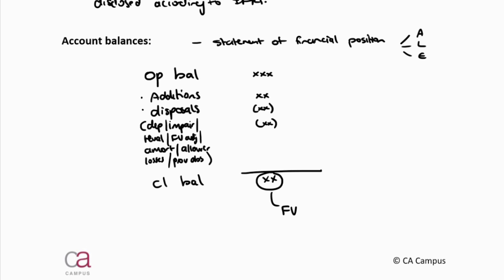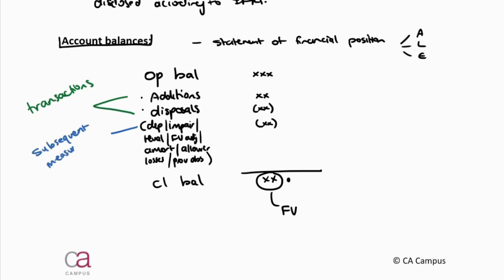When we are looking at account balances, you've got to see the big picture. It's not just the closing amount — there are elements that make up this account balance. The opening balance is part of that, the additions and disposals are transactions that need to be incorporated to get to that closing amount, and then you've got this subsequent measurement element.